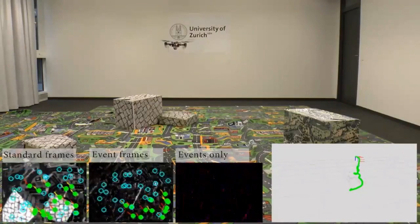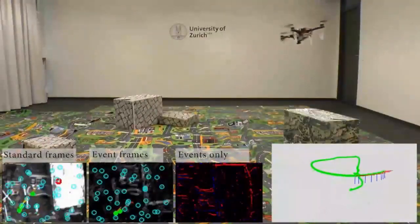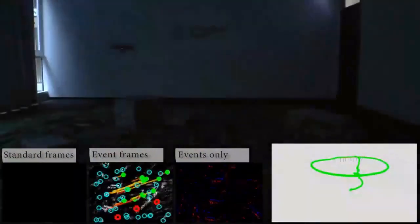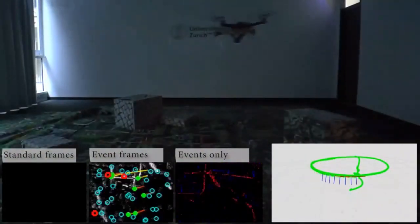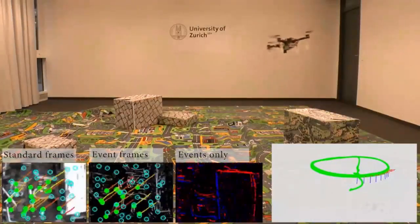When the light is on, the standard camera provides good quality images, which Ultimate SLAM uses for tracking. As soon as the light is off, the standard camera becomes blind, but Ultimate SLAM can still track features in the event stream, which allows it to keep a stable state estimate.